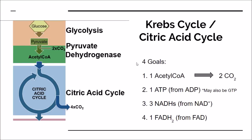The goal of the Krebs cycle covers four different very important points. The first one is that you're turning that acetyl-CoA into carbon dioxide molecules. Each acetyl-CoA produces two carbon dioxides via decarboxylation reactions.